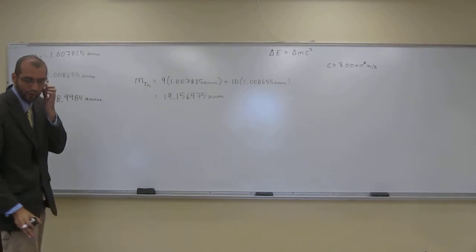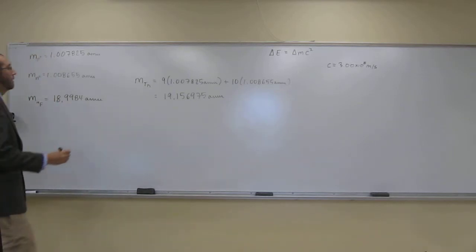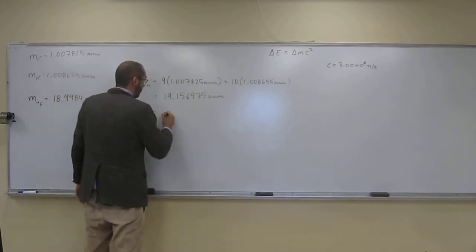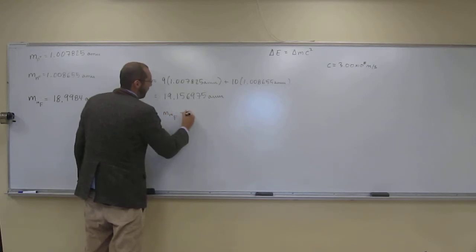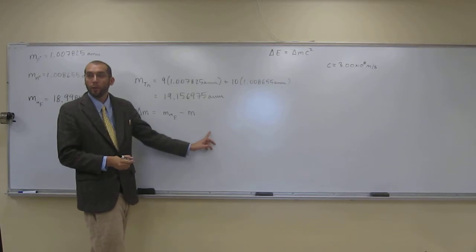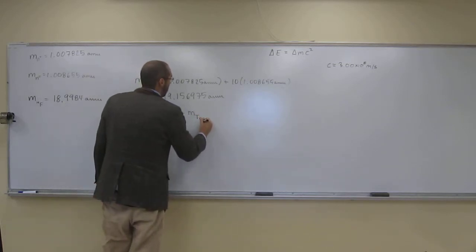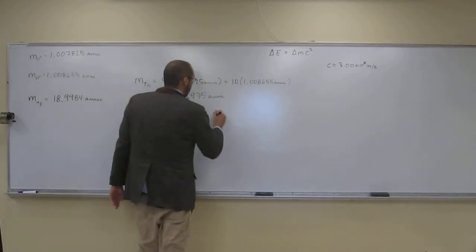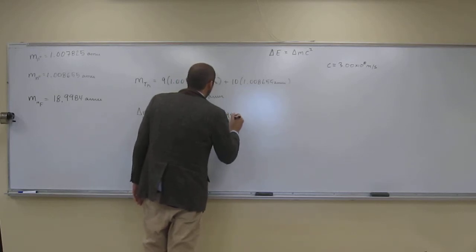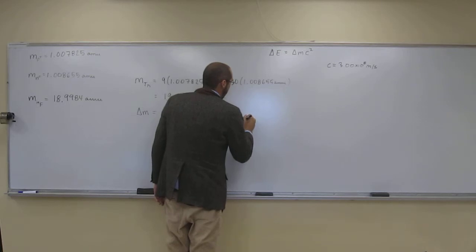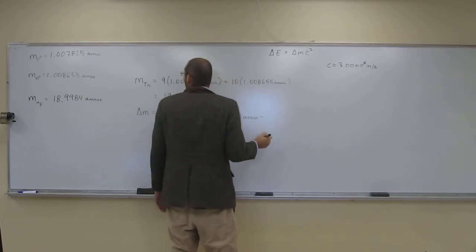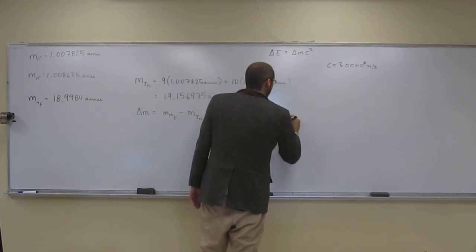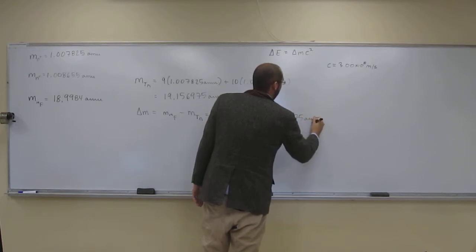So when I do that, to six significant figures after the decimal, I get 19.156975 AMU. That's the mass of the total number of nucleons. The mass difference is going to be the mass of the fluorine-19 atom minus the mass of the total number of nucleons. So do we have both of those numbers? Yes.